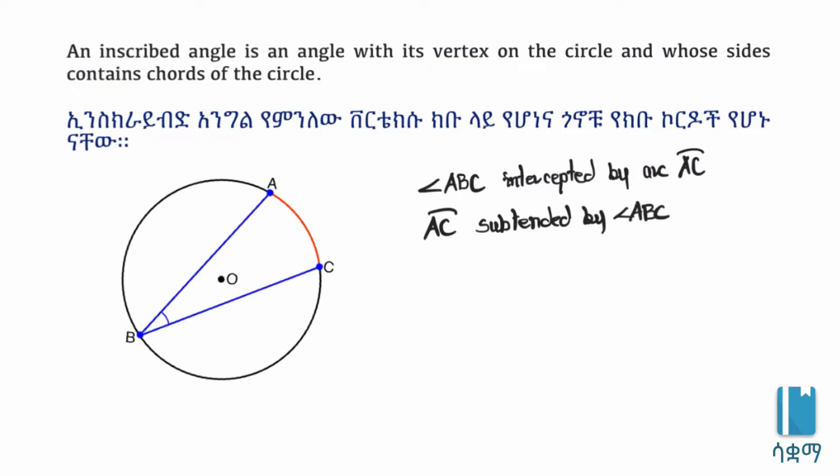The inscribed angle ABC, which is formed by two chords and the vertex on the circle, is intercepted by the arc AC.